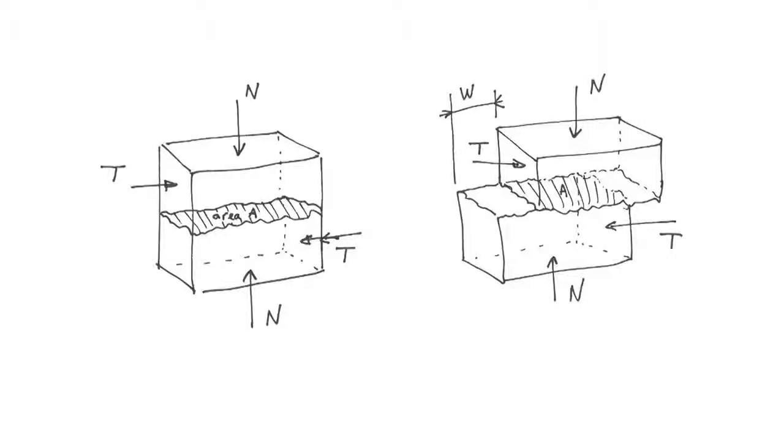During the test, the tangential force T required to displace one part of the joint is recorded together with the actual displacement W. N and T are later converted to stresses by dividing them by the contact area of the joint, A.